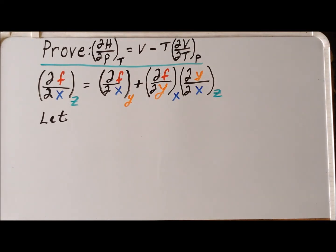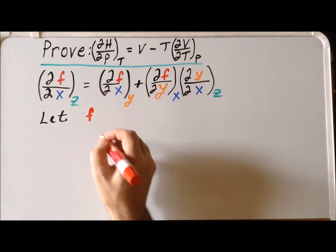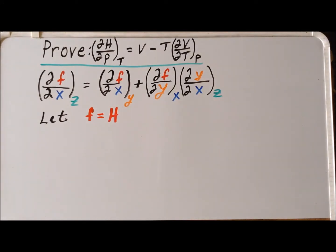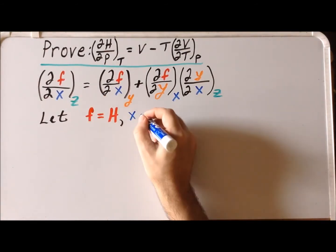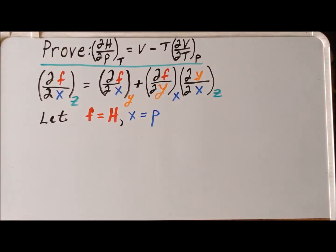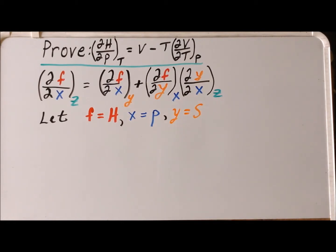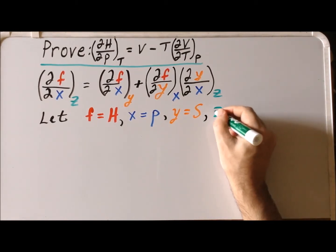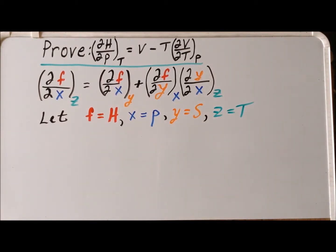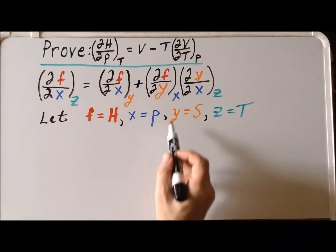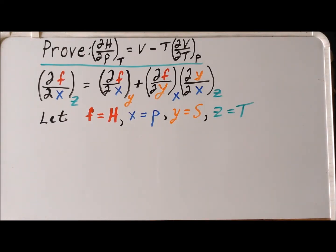We can now make the following assignments. In place of the function f, let's replace that with the enthalpy H. Similarly, x in our identity will be replaced by the pressure. The variable y is going to represent the entropy S, and the variable z is going to be our temperature T.